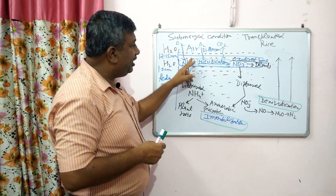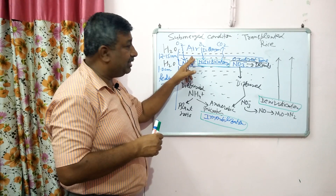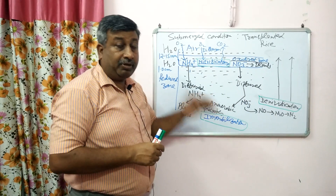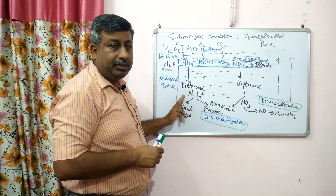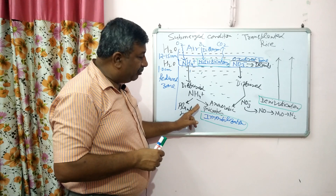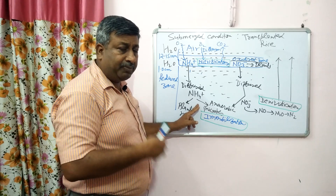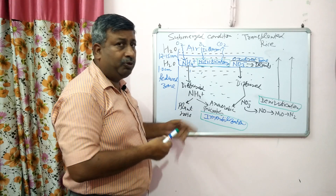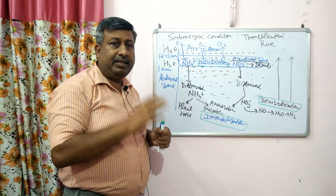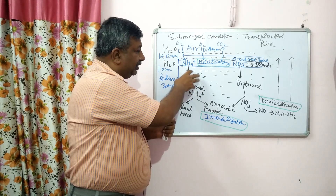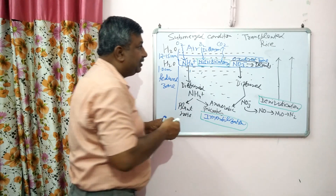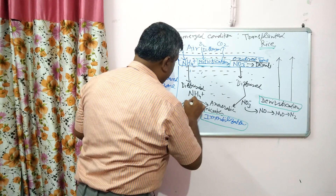That is why urea is used — because urea produces ammonium ions. However, if urea is placed in the oxidized zone, the ammonium formed is nitrified to nitrate and that nitrate will be lost. Therefore, urea should be placed in the reduced zone through deeper placement, so that ammonium ions remain available for plant roots. Some ammonium will be immobilized by microbes temporarily, but will be released after microbial death.